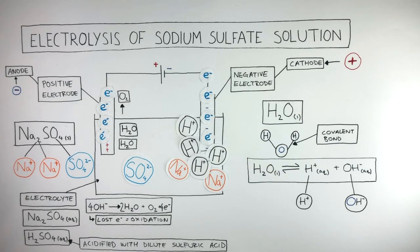When it comes to which cation will be discharged at the cathode: if the metal is more reactive than hydrogen, then hydrogen will be discharged; if the metal is less reactive than hydrogen, then the less reactive metal will be discharged. In this case, sodium is more reactive than hydrogen, so hydrogen will be discharged at the cathode.